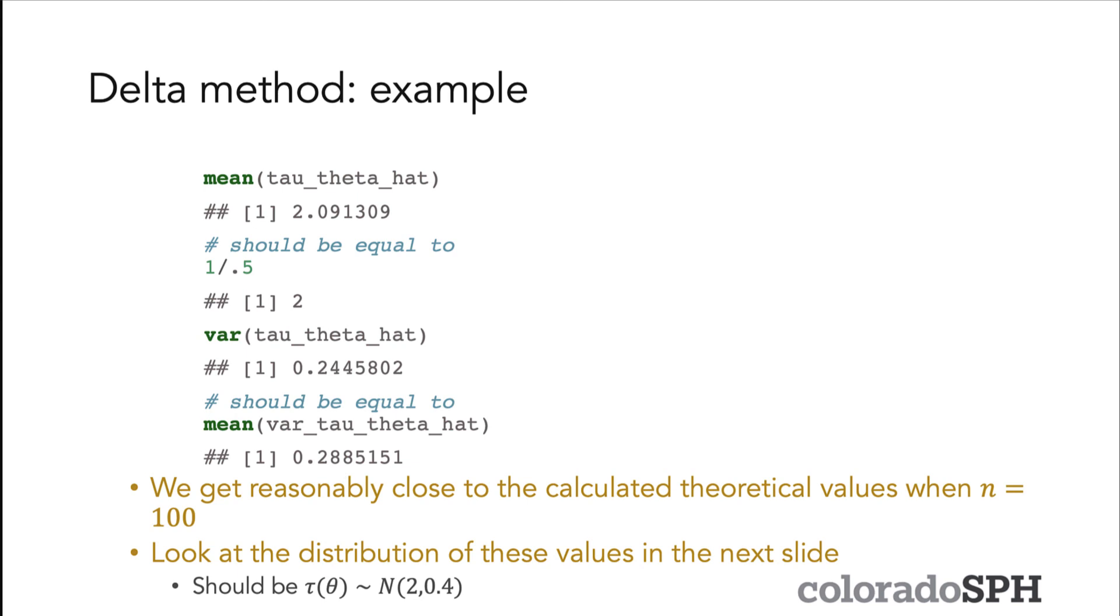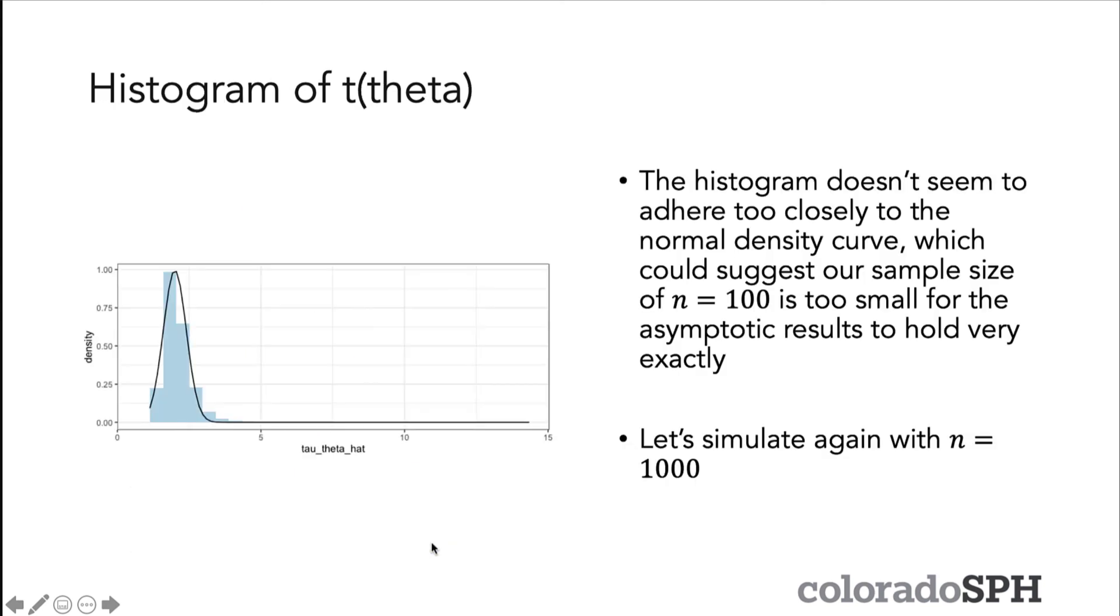On the next slide, I look at all the distributions of the τ(θ)'s that we calculated in this simulation. The true value of τ(θ) should be 1 over 0.5, which is equal to 2, and your values are clumped around there. But our distribution—and I've overlaid a normal line on top of this—doesn't quite seem normal. It's not terrible, but it could be better.